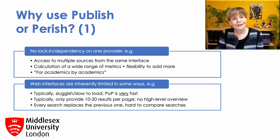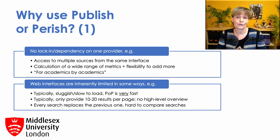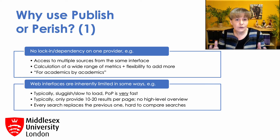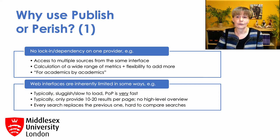Second, web interfaces also have some limitations. Many of them tend to focus on eye candy over content and are therefore typically very slow to load. By the time that some of them are fully loaded, I usually have already completed my search in Publish or Perish. And web interfaces usually only provide 10 or at most 20 results per page, meaning that if you're searching for an academic with hundreds of publications or doing a literature review with hundreds of results, you have to tediously click through page by page.